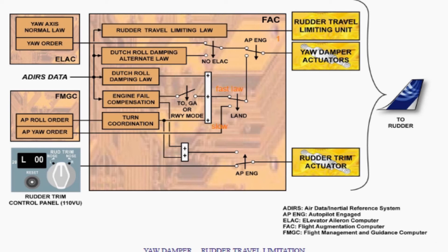Now a short look at the rudder trim control panel. The rudder trim control panel controls the rudder trim actuator via FAC in manual mode. In auto mode, the rudder trim is controlled by the FAC, where engine failure compensation and turn coordination is controlled by the FAC. This is a short brief about the yaw damper and rudder trim control in manual and auto mode.